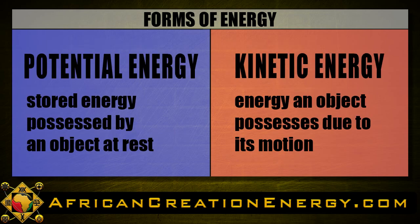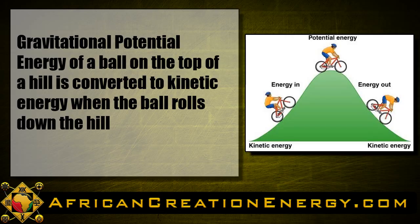The different forms of energy can be categorized as either potential energy or kinetic energy. Potential energy is the stored energy possessed by an object at rest. Kinetic energy is the energy an object possesses due to its motion. For example, the gravitational potential energy of a ball on top of a hill is converted to kinetic energy when the ball rolls down the hill.